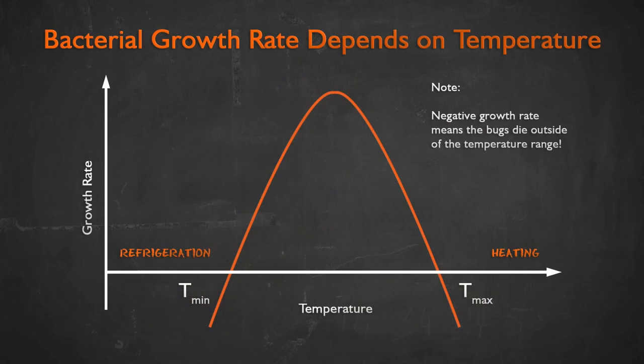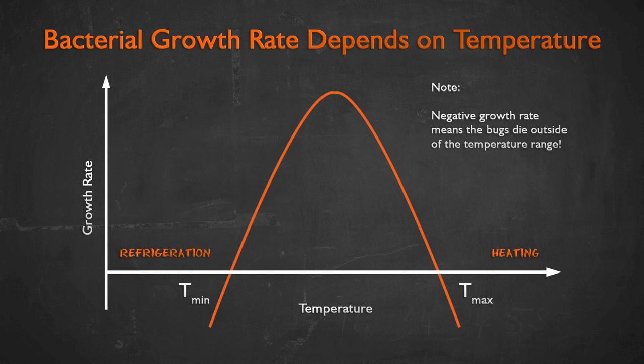The growth rate depends on conditions. The two most important conditions in cooking situations are temperature and pH. If we plot the growth rate as a function of temperature, the growth rate is positive over some range of temperature: there is a minimum temperature below which bacteria won't grow and a maximum temperature above which they also won't grow. Outside this temperature range, bacteria won't divide and will actually tend to die.